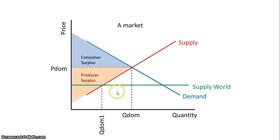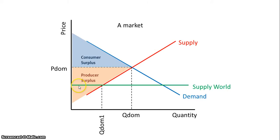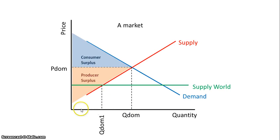The first thing we want to note is where our world supply cuts across our domestic supply — that occurs at QDOM1. From 0 to QDOM1 is the amount of supply the domestic market is now willing and able to furnish at this price. It had been selling QDOM, but now because of world trade its revenue and sales have been restricted to QDOM1. For producers, opening the market up to freer global trade has not been a fantastic thing, as they've seen their revenue dwindle quite a bit.